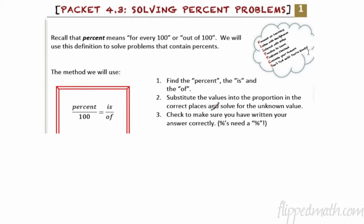All right, so here's how we're going to solve percent problems. Basically, when we're reading all these, there's going to be a percent, an is number, and an of number. We're going to substitute them into this proportion: percent over 100 equals is over of. Then we're going to cross multiply and solve. And then we're going to check to make sure we've written the answer correctly, which means if they're asking for a percent, you need to put a percent sign.